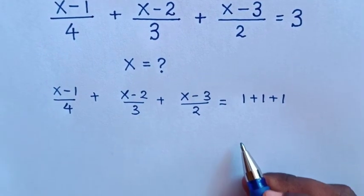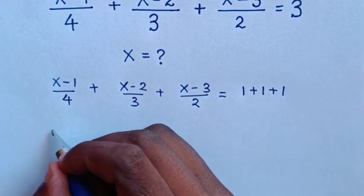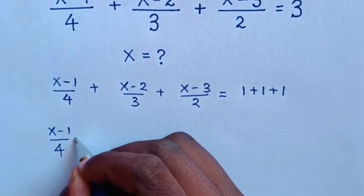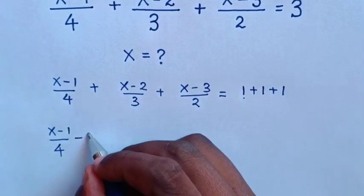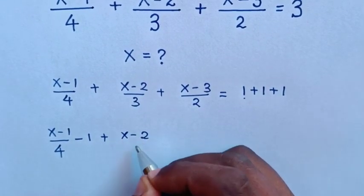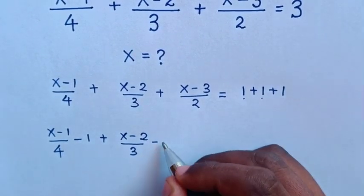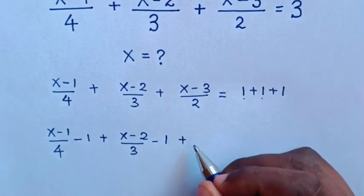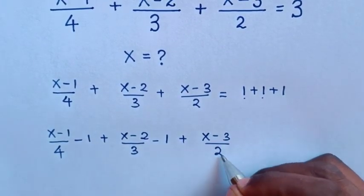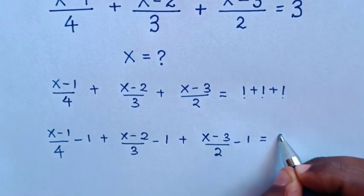Then the next step, we take the 1s to the left side. So it will be x minus 1 over 4 minus 1, plus x minus 2 over 3 minus 1, plus x minus 3 over 2 minus 1, is equal to 0.